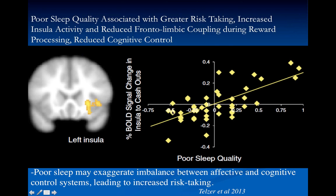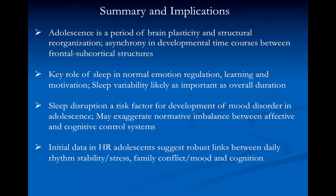A neuroimaging study at UCLA looked at neural activity during performance on a risk-taking task and how it's related to sleep. Poor sleep quality was associated with greater risk-taking behavior, as well as more activity in the insula — a brain structure related to reward — and reduced cognitive control, meaning poor self-regulation on the task. We think poor sleep quality is an important factor related to risk-taking behavior and may be a moderator.